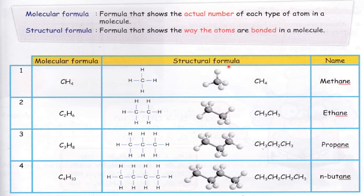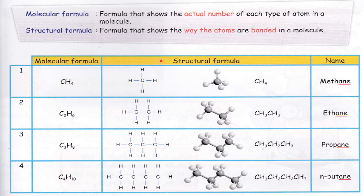If the question asks you about structural formula, you need to draw the bonds. Structural formula is a formula that shows the way the atoms are bonded in a molecule. If the question asks for structural formula and you give molecular formula, there will be no mark for you. For structural formula you need to draw the structure of the bond — for alkane, one carbon bonded to four hydrogens, which is methane.